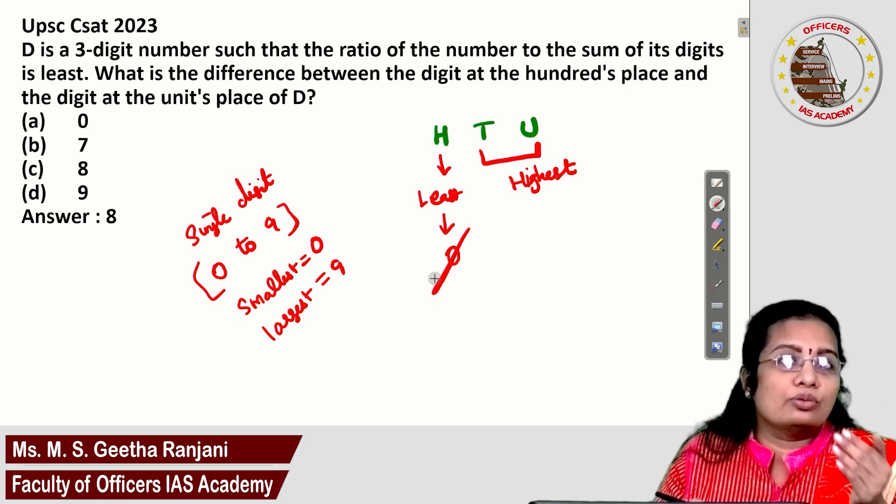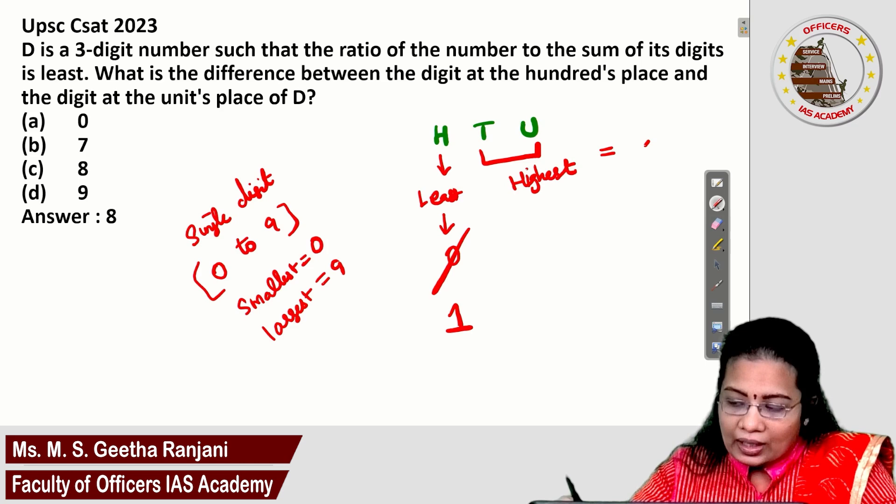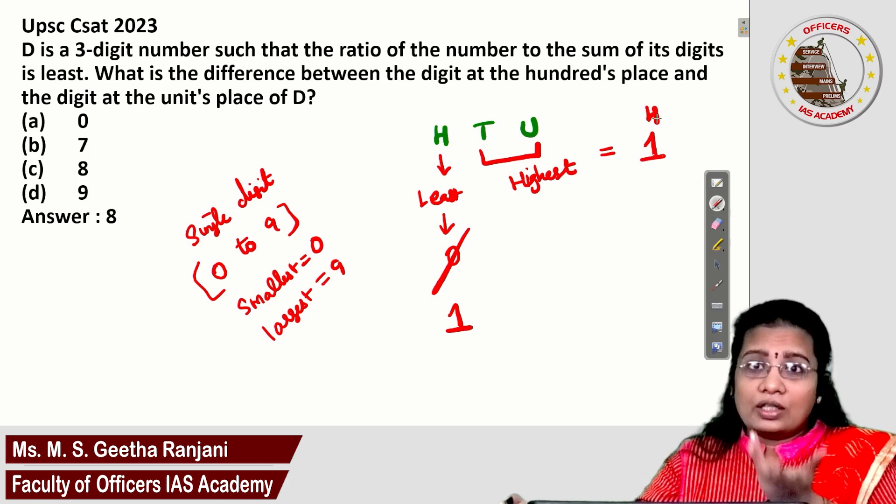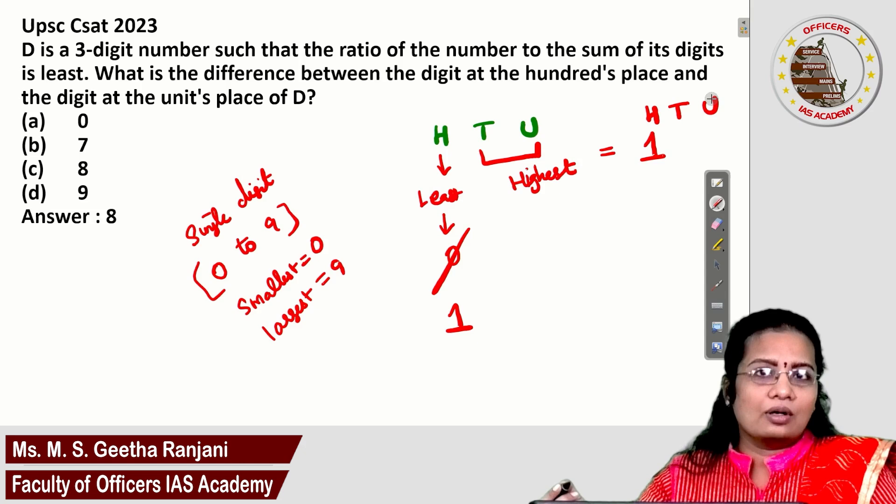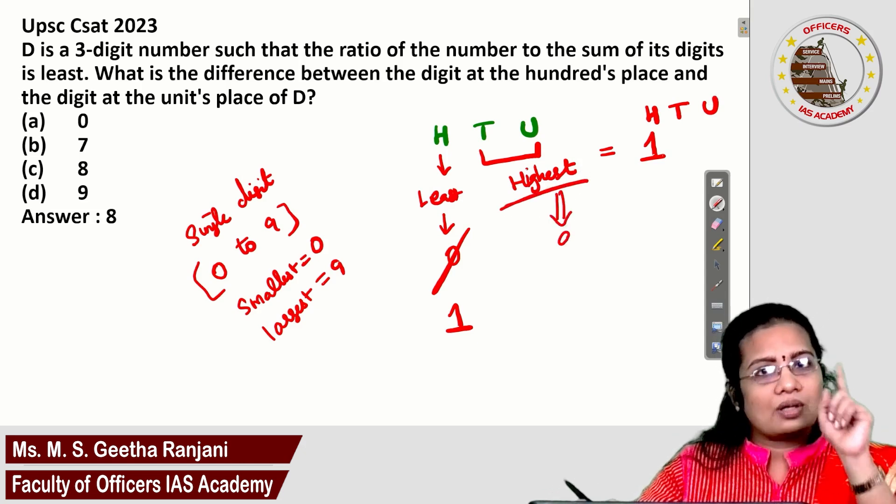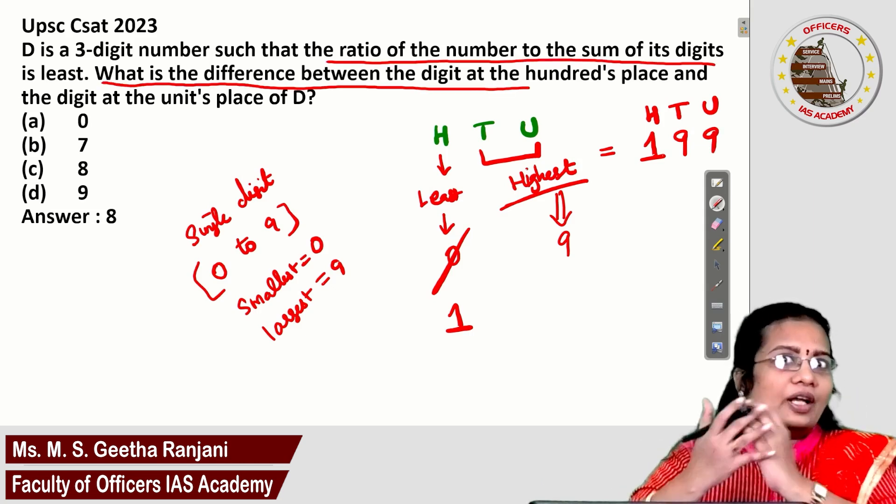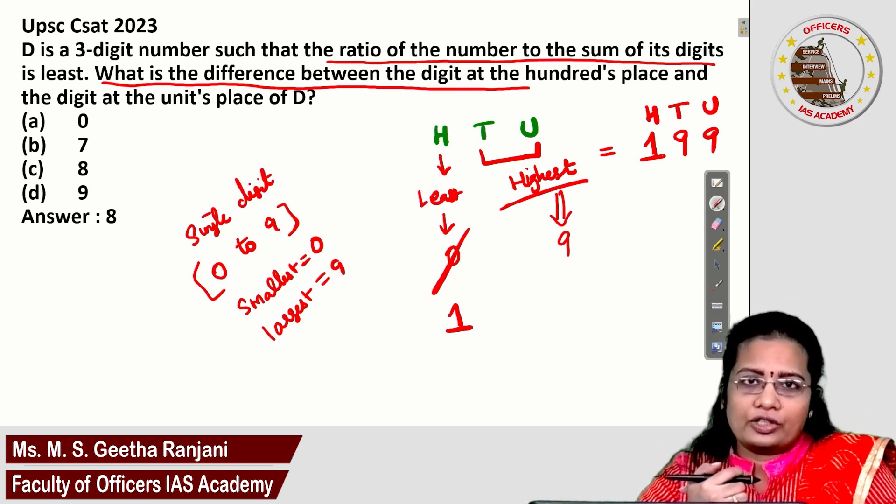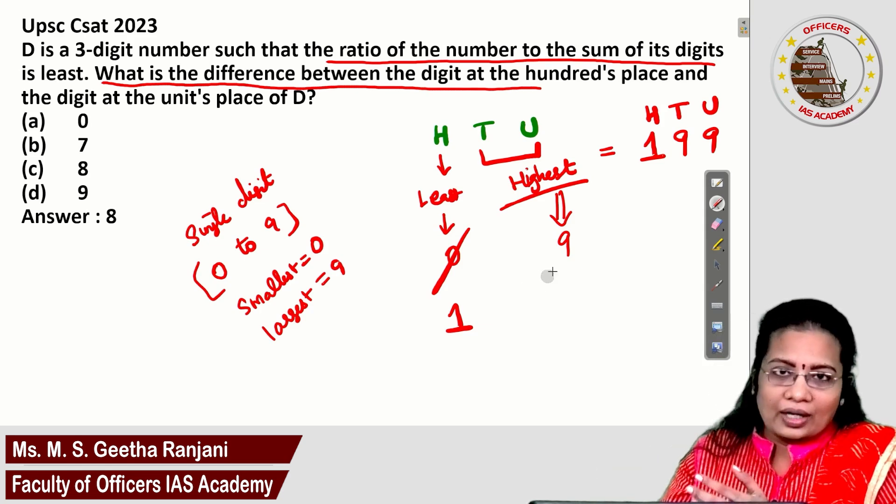Next, the least number to 0 is 1. So it's best to place 1 in the hundreds place. What about the remaining tens and units place? They must be the highest. The highest single digit value is 9. Let me take 9 and 9 for the tens and units place. No condition is given regarding repetition, so you can consider repetition is allowed.